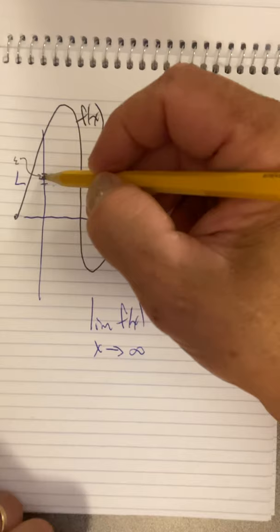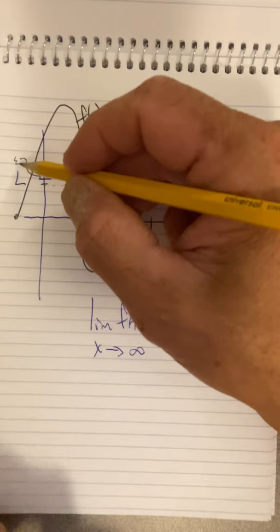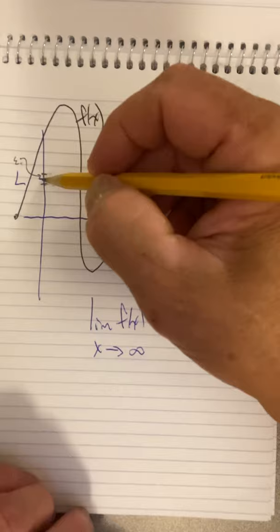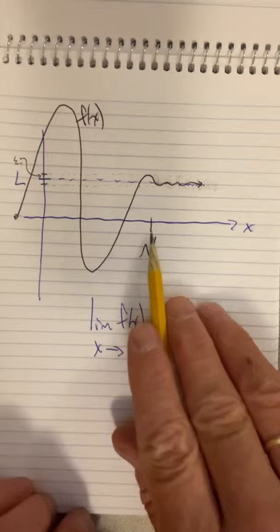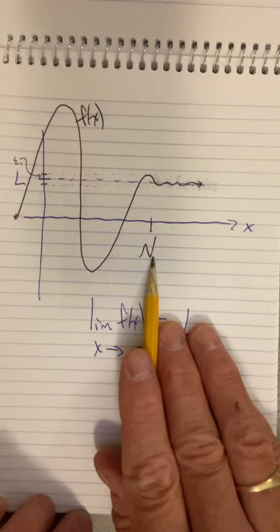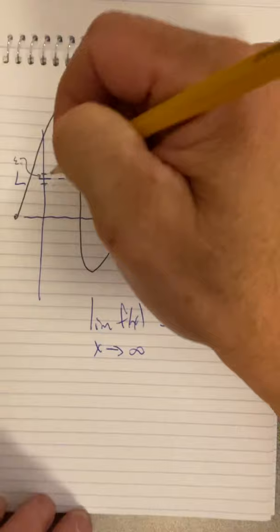So this epsilon is a proximity measure. It's a distance from L. Now, we can make this as small as we want because it said for any epsilon. So we could picture this getting smaller and smaller and smaller, closing in on L. But for any epsilon, there must be a point on the x-axis that when x gets beyond this, the function is always closer to L than epsilon.